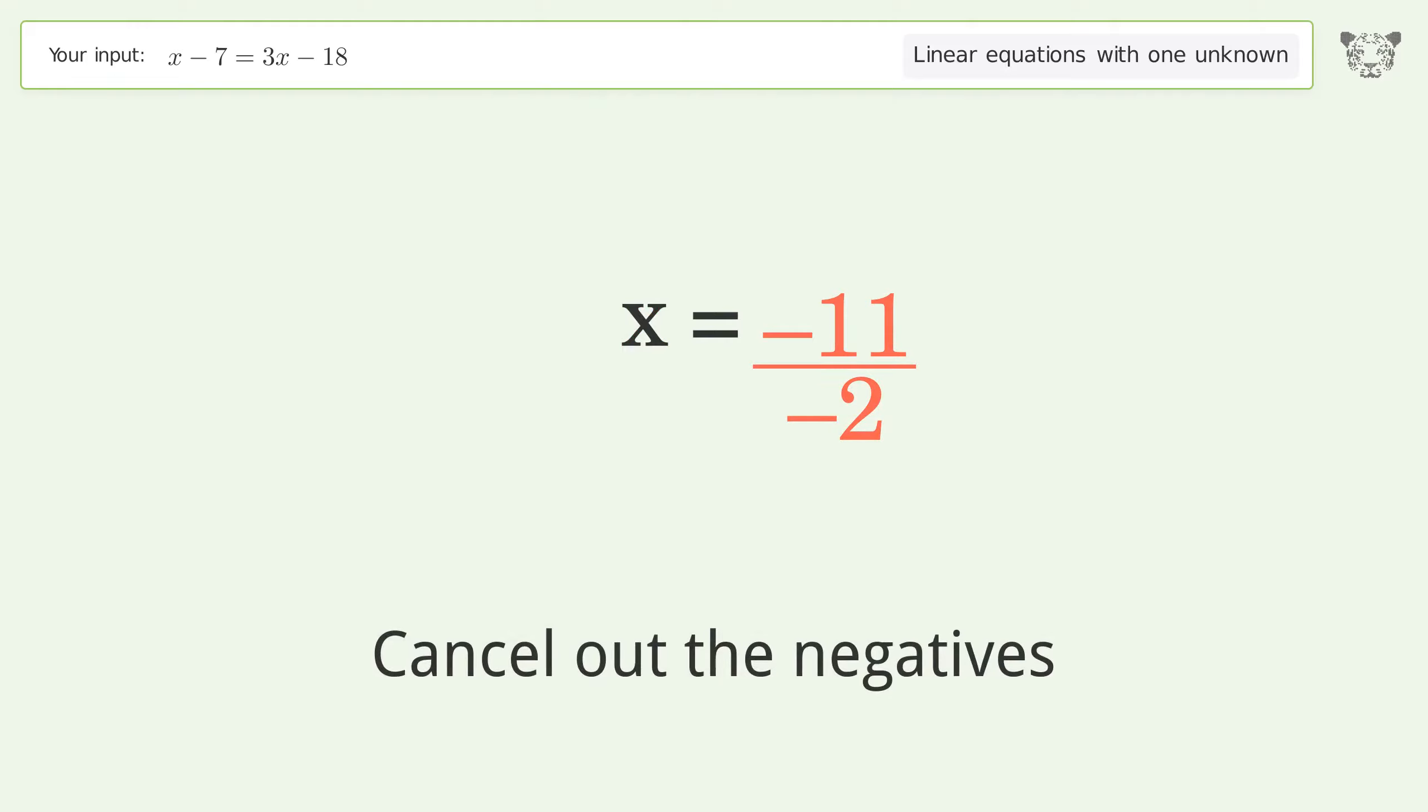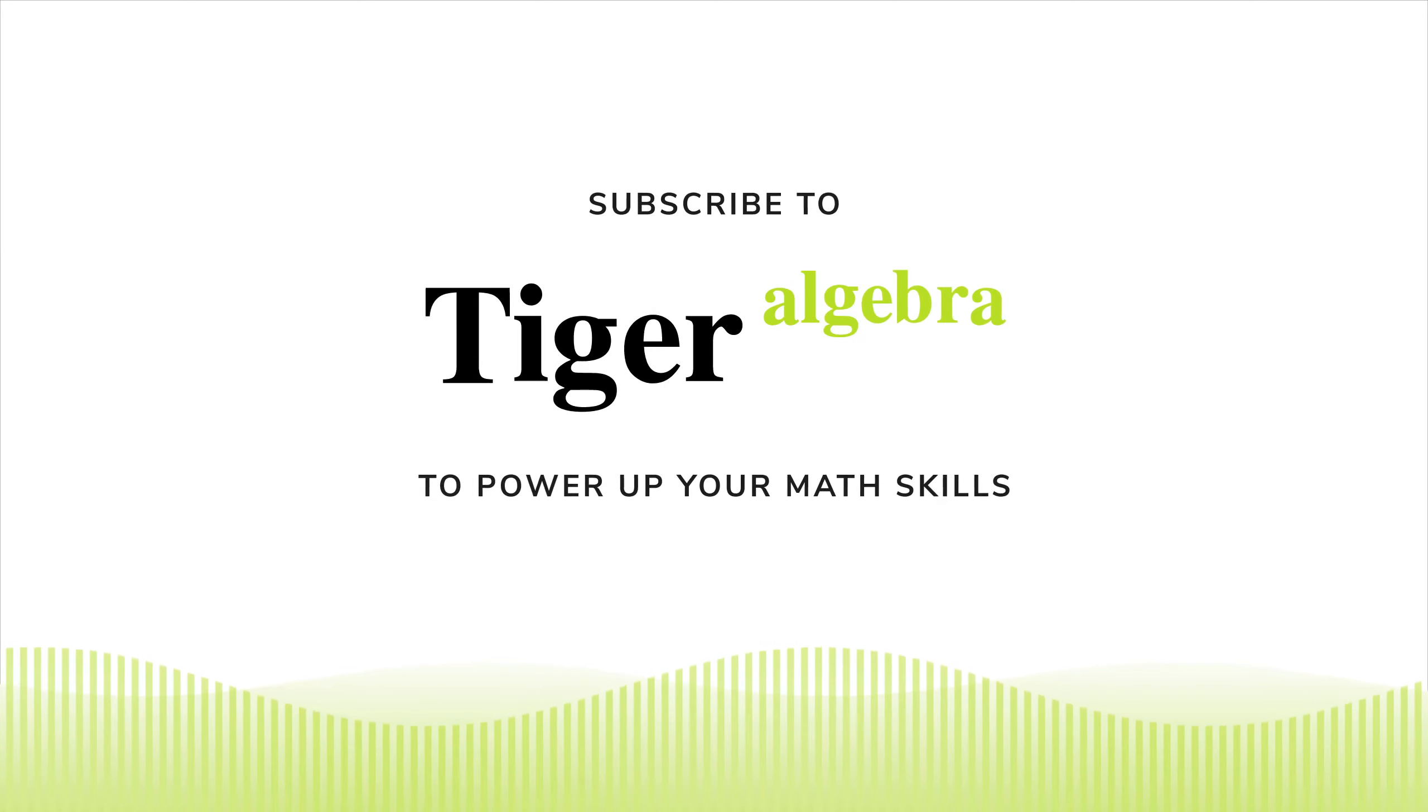Simplify the fraction. Cancel out the negatives. And so the final result is x equals 11 over 2.